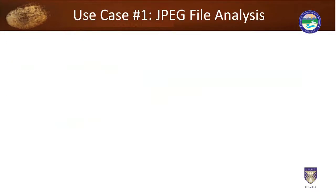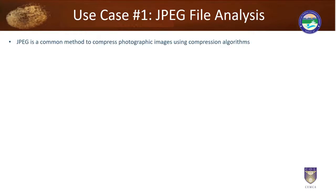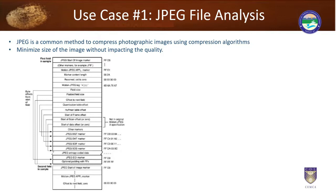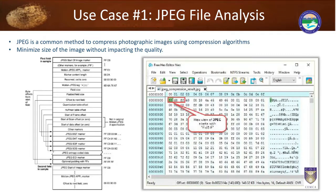Use case one: analyzing a JPEG file. JPEG is a common method to compress photographic images using compression algorithms. This algorithm minimizes the size of the image without impacting quality. When you analyze the file, the first field you get is JPEG start, then motion markers, reserved motion fields, and so on. This is the structure inside a JPEG file, and using a free hex editor you can find out the hex view of whatever is in the file and analyze it.